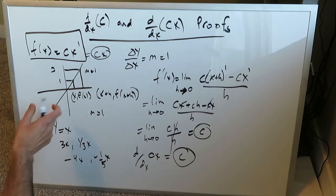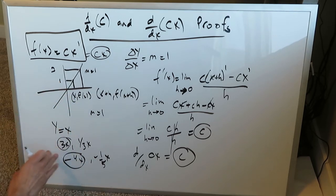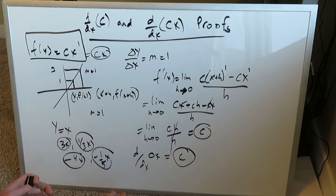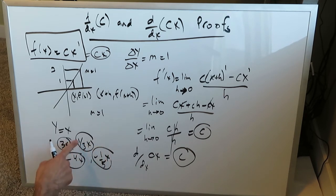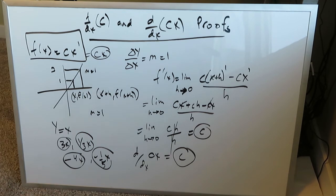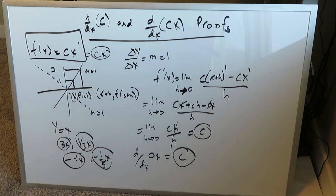For lines like 3x — a steep positive slope — the derivative is just 3. For −4x — steep but in the opposite direction — the derivative is −4. For fractional slopes like (1/3)x or (−1/5)x, which pass through the origin with flatter slopes, the derivative retains the fractional coefficient: 1/3 and −1/5 respectively. Let's also formally prove the case where f(x) = −cx, a negative-slope line through the origin.